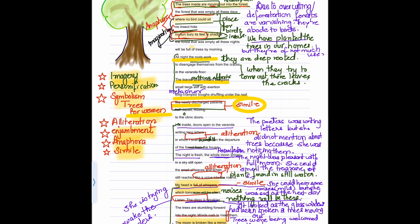In the third paragraph, she says that the poetess was writing letters. But she was noticing. I sit inside, doors open to the verandah. And she was writing letters in which I scarcely mention. She doesn't tell about the departure of the forest from the house. The night is fresh.